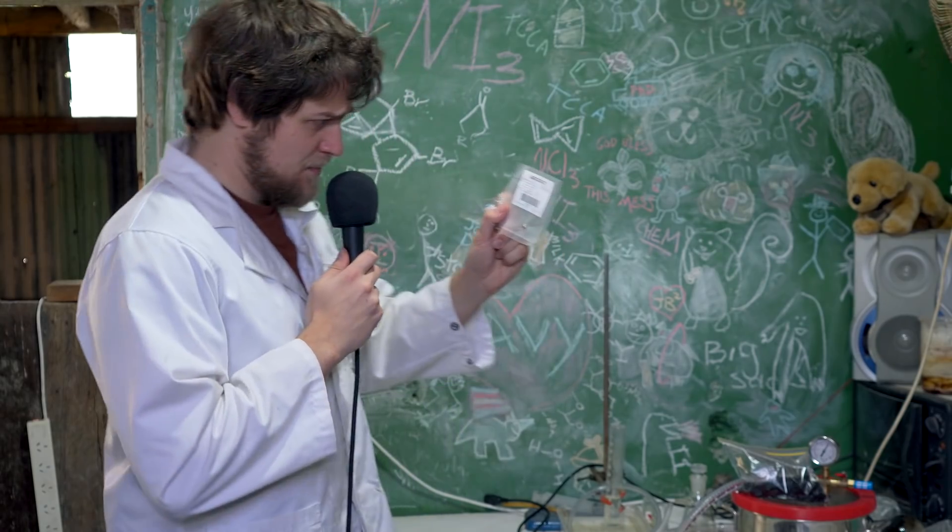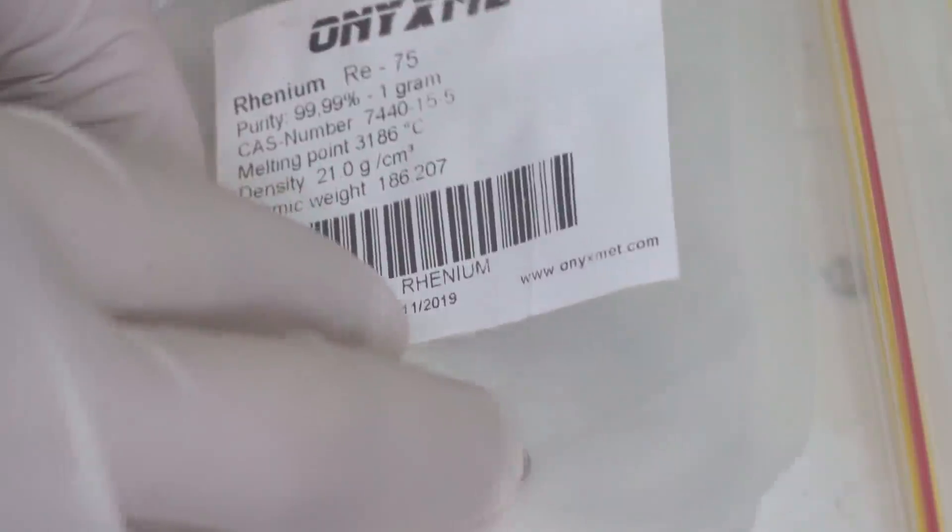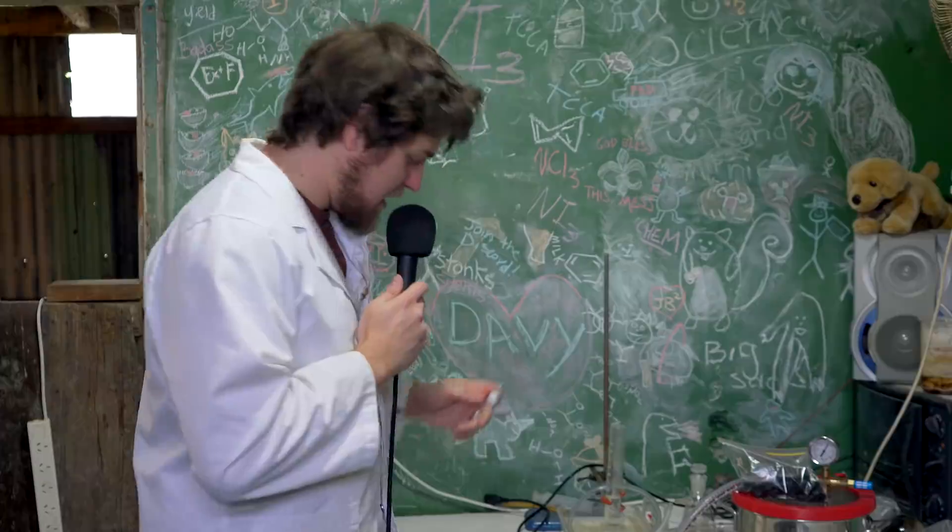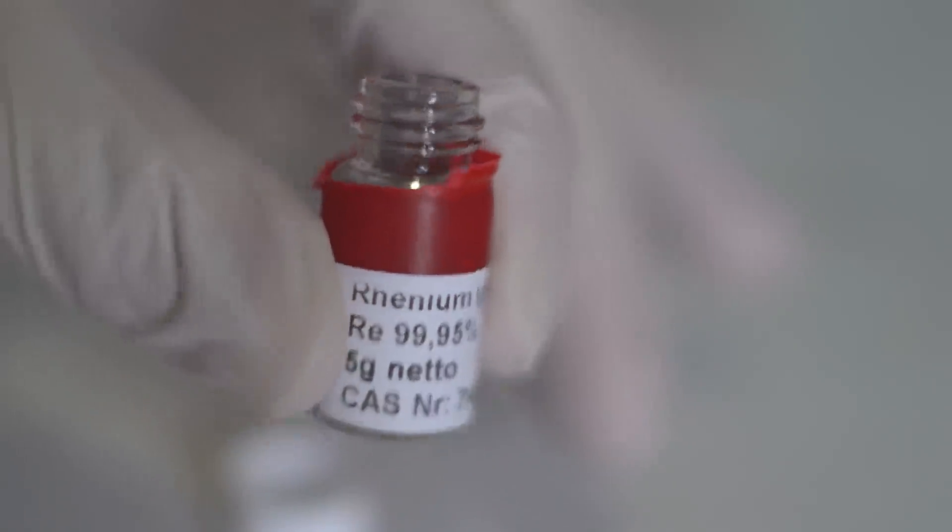A one gram pellet here. Pellet is a much nicer word than lump. And then I've got five grams of powder here. So let's talk about rhenium a little, because I don't think it's insulting to say that most of you won't know very much about rhenium, because it's just an obscure element.